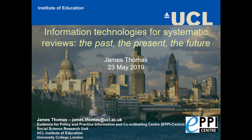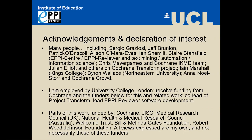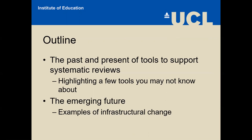I must acknowledge that what I'm going to talk about today is the work of many people, probably more people than are listed here. I also have a declaration of interest — I'm interested in everything here. I'm employed by University College London and I lead the EPI reviewer software development. I've got quite a simple outline: I'm thinking about the past and present of tools for systematic reviews, highlighting a couple of tools that are ready for use which you might want to try out, and then I'm going to talk about the emerging future and a couple of examples of infrastructural change.